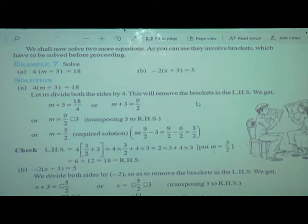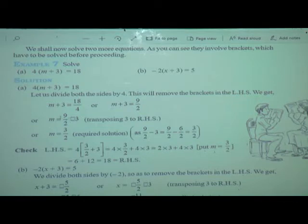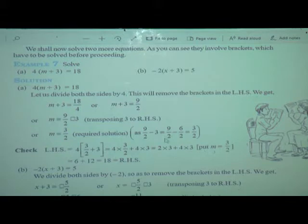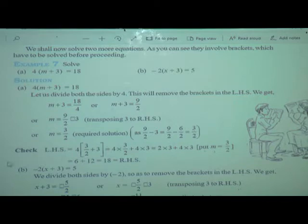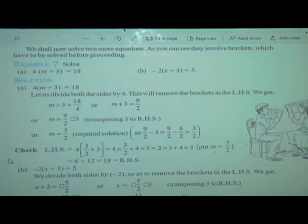So m plus 3 is equal to 9 upon 2. Now we transpose, taking plus 3 from LHS to RHS as minus 3. When it is 9 upon 2 minus 3, we have to find the LCM to solve. After solving, 9 upon 2 minus 3 gives 3 upon 2. So the value of m is 3 upon 2. Now to check, as I told in previous classes, we substitute the value of m.